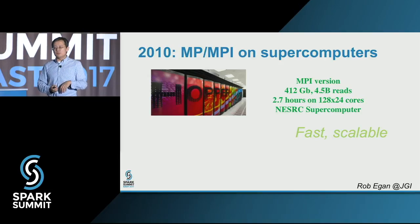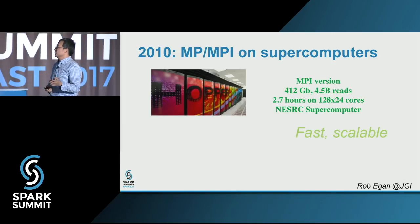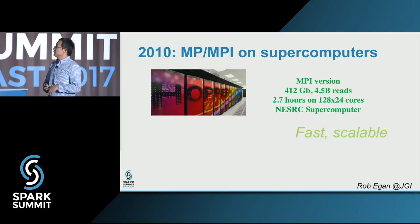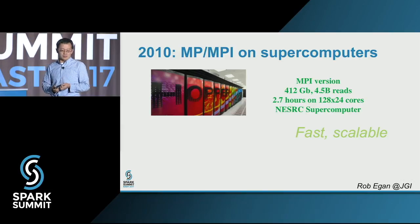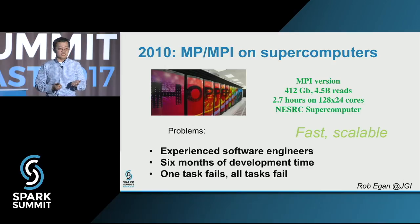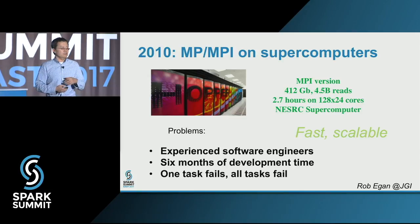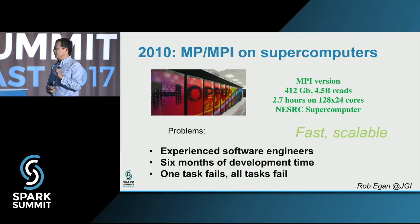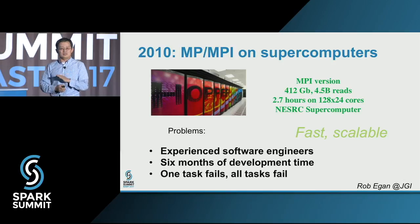Then a world-class software engineer within our group, Rob Egan, said he'd solve this problem using MPI. He developed a very fast and scalable MPI solution. We can crunch half a terabyte of data in only a few hours using 110 nodes on NERSC's Hopper supercomputer. However, this solution is not ideal either, because we really need experienced software engineers and we keep losing them to Google and Amazon. Even experienced engineers need a lot of development time to implement parallelism and robustness — and the robustness is not perfect. If one task fails, the entire job fails.